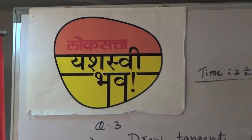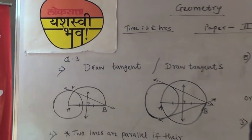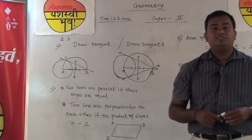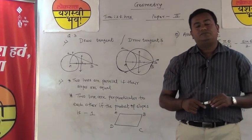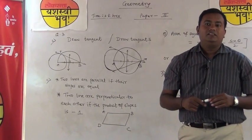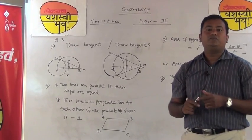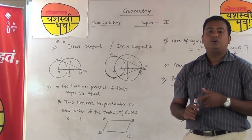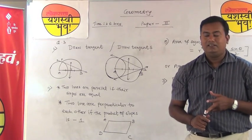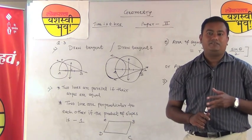Welcome to Lokasattva, Yashashibaba. Now we will discuss questions number 3, 4 and 5. In the construction chapter, there are three types of tangent problems: to draw the tangent when the point is on the circle, when the point is outside the circle, and without using the center of the circle.